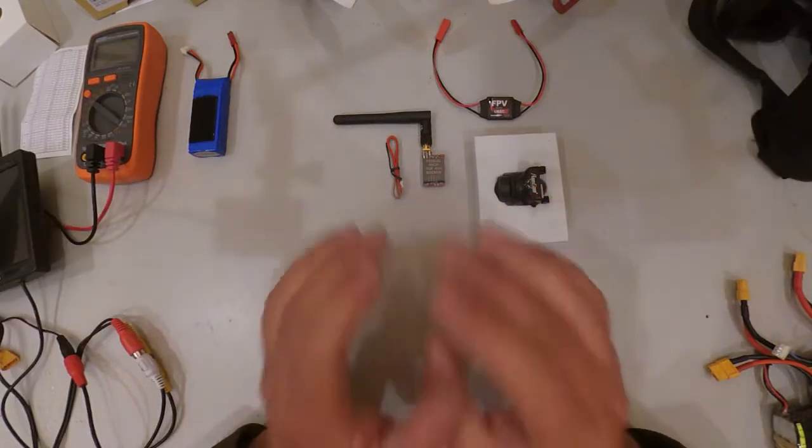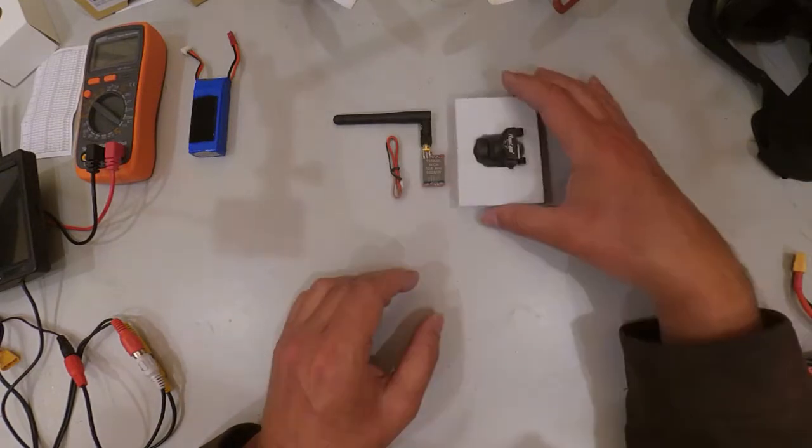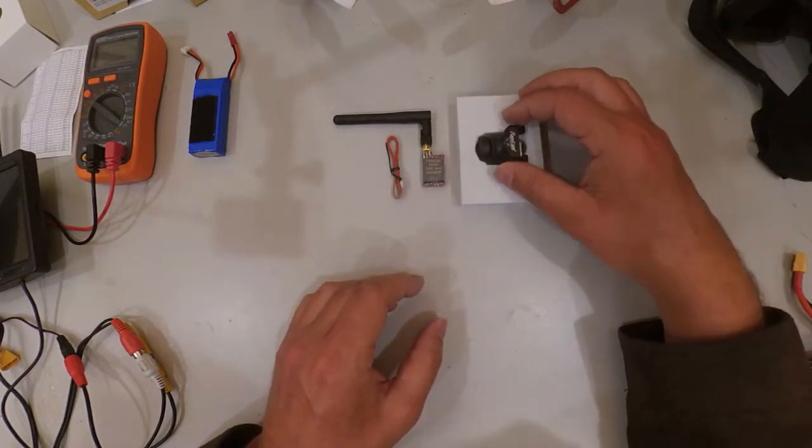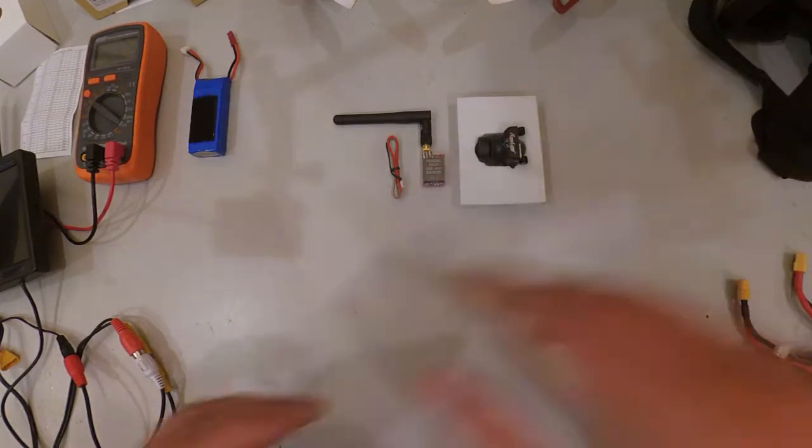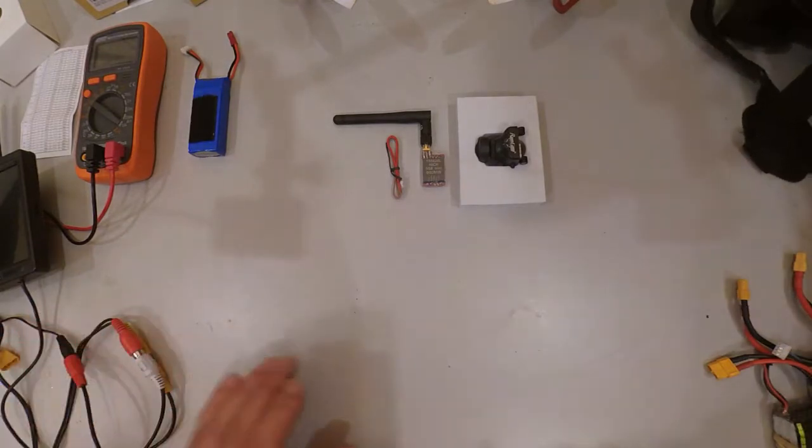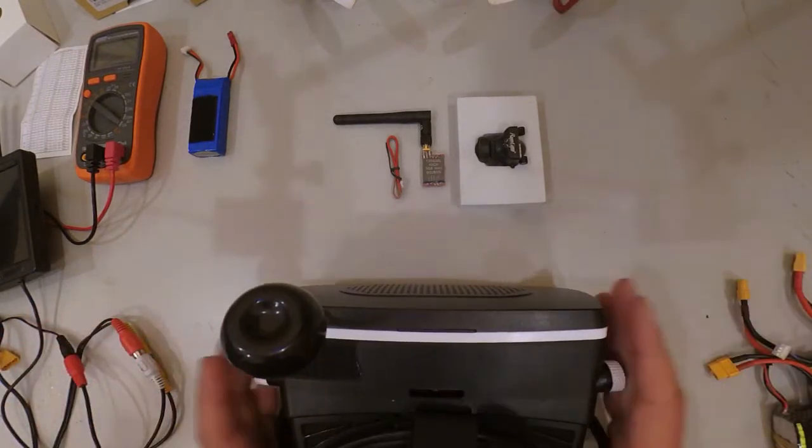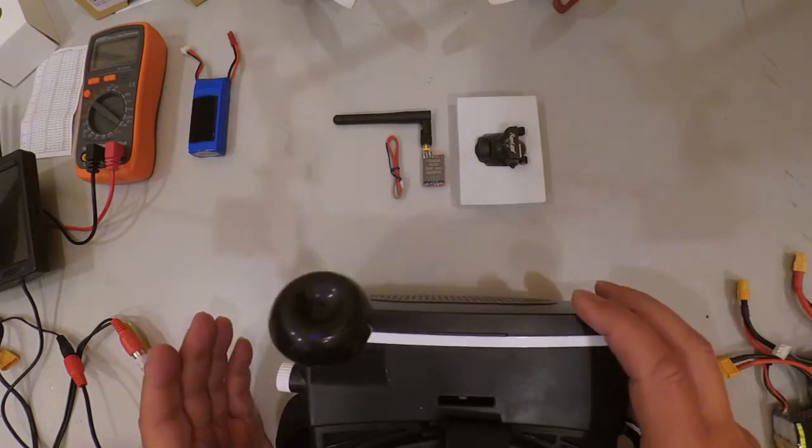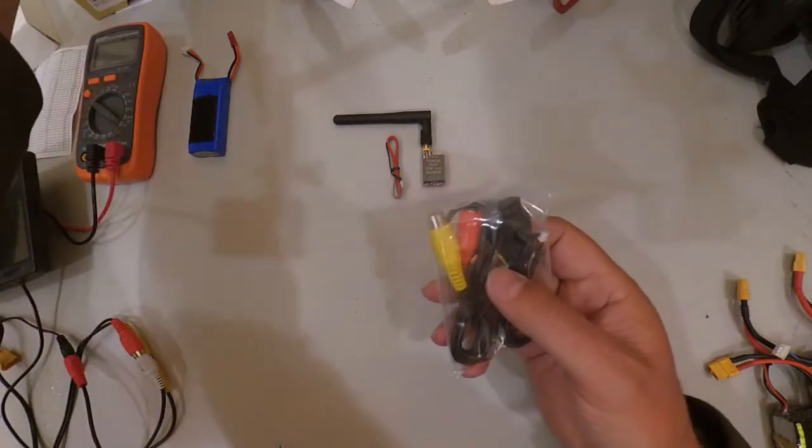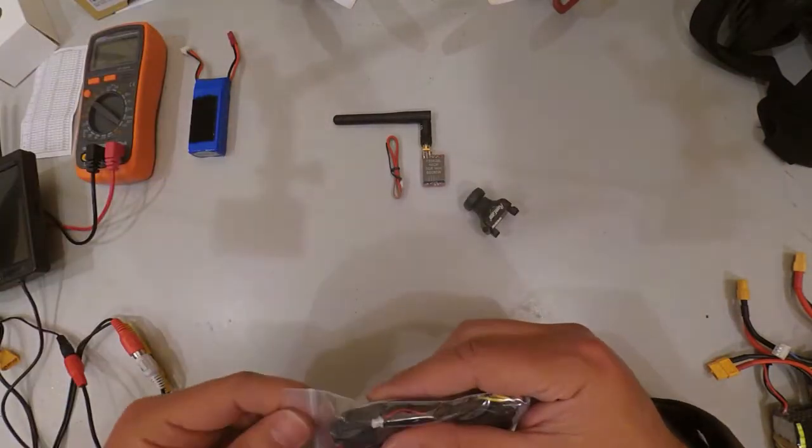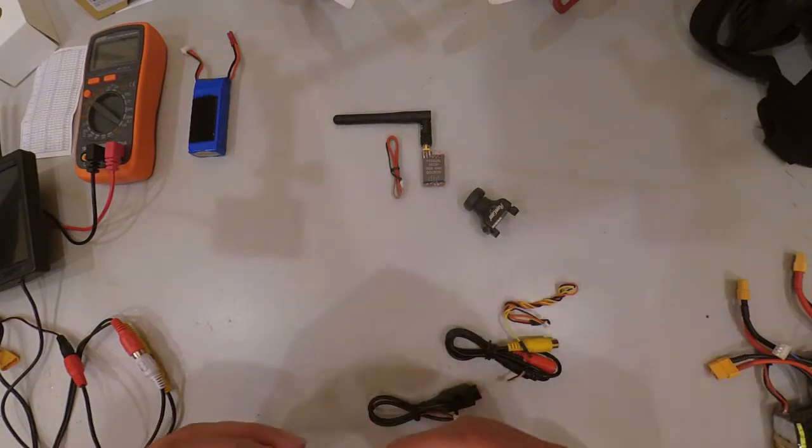The first question that always comes up is how do you put this all together. Considering your components, we have the camera with its transmitter, and we have a screen and its receiver which need power. Let me show you how we're going to put that together.